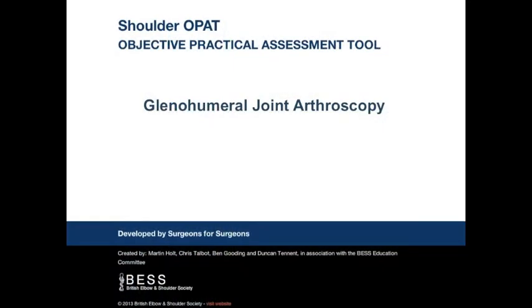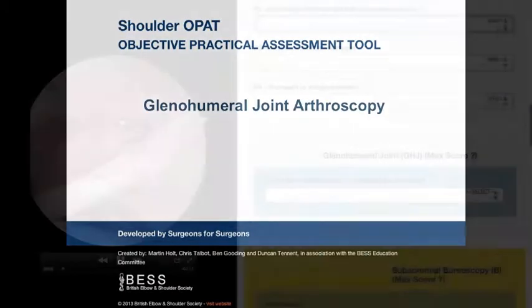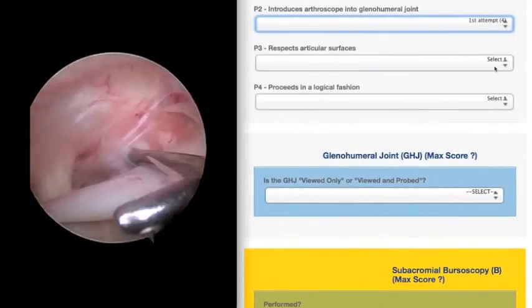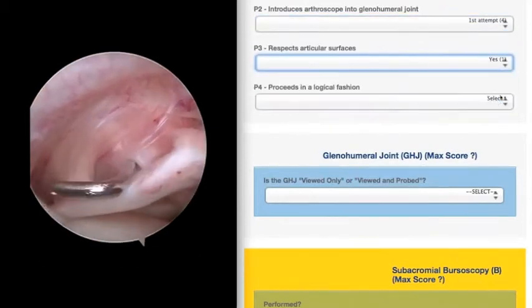The trainee is then asked to introduce the arthroscope into the glenohumeral joint. The score reduces with each attempt, and a maximum of three attempts is allowed.